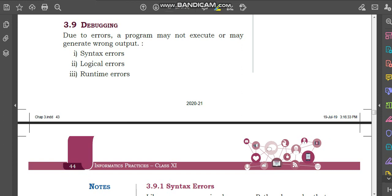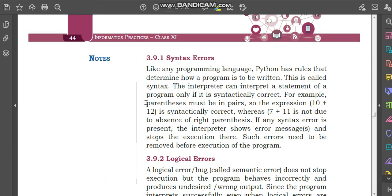Om Namah Shivaya children. The topic we will begin with in this video is debugging. Debugging - bug means errors. Due to errors, a program may not execute or may generate wrong output. There are three types of errors that you will learn: syntax errors, logical errors, and runtime errors.